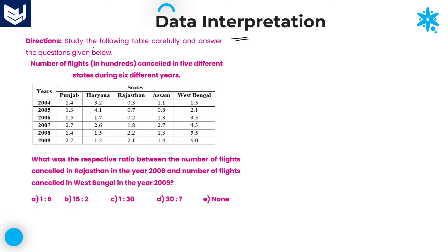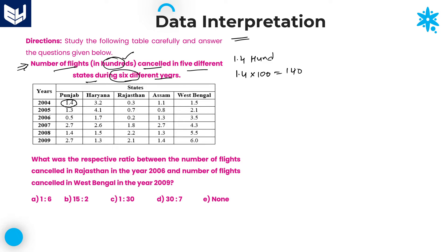First of all, the information is about: study the following table carefully and answer the given questions. This is the information about the number of flights cancelled in five different states during six different years. The information is completely about the number of flights cancelled. If you observe, the number of flights value is always given in terms of hundreds — each and every value is given in terms of hundreds. It means that here in Punjab in 2004, the number of flights cancelled is 1.4, which means you need to multiply 1.4 with 100, which is equal to 140. Likewise, you need to multiply each and every value in the table with 100 in order to get the number of flights cancelled in each and every state in each and every year.